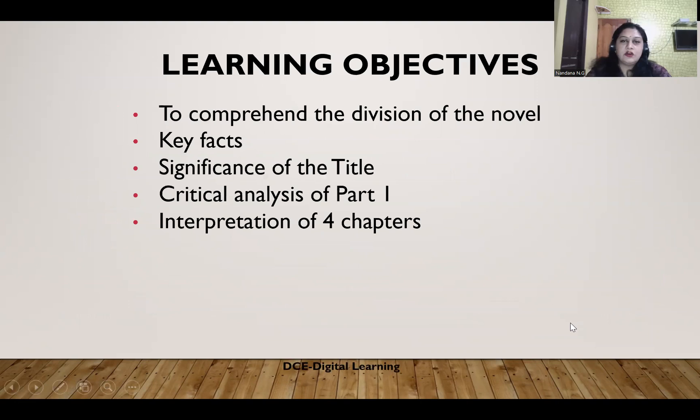The learning objectives are to comprehend the division of the novel — the way the novel is divided and why it is divided that way, which is a very important element. Once you understand that, it will lead to better comprehension of the novel. Other objectives include understanding the key facts, significance of the title, and the critical analysis of part one.